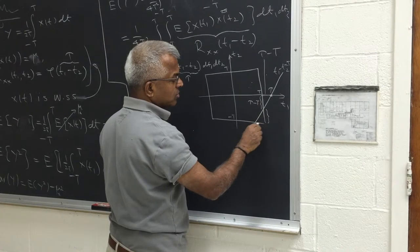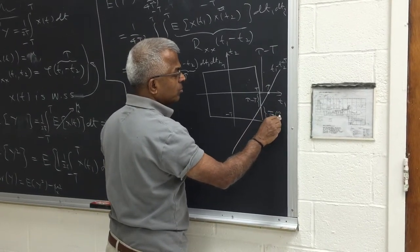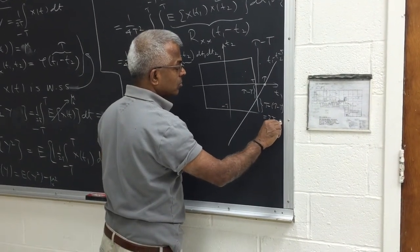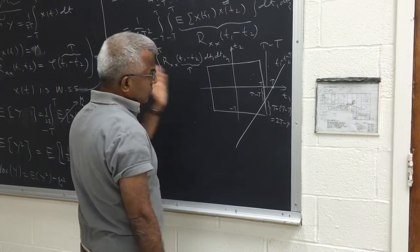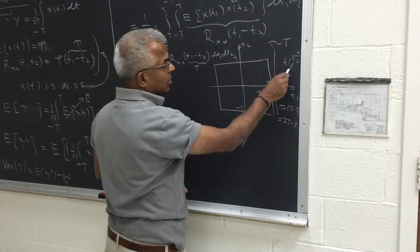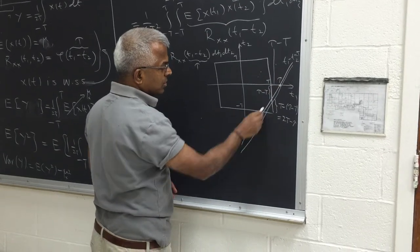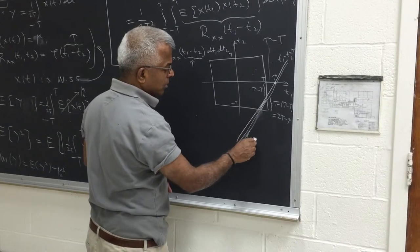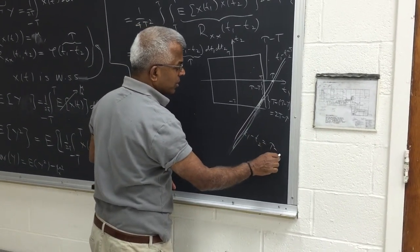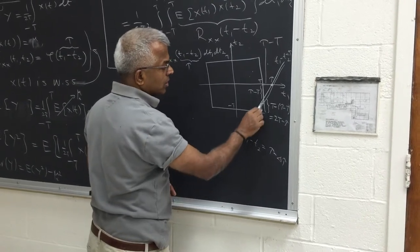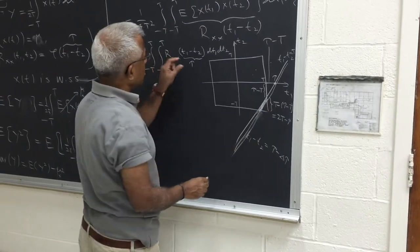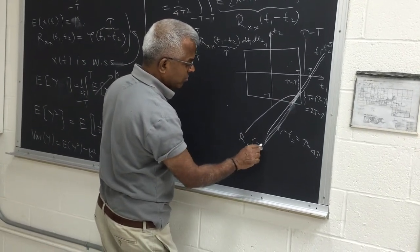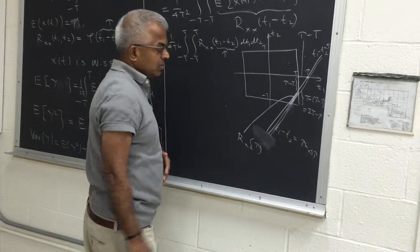So this distance, which is the side of the triangle, is t minus (τ minus t), so it will turn out to be 2t minus τ. Now we make a small change from τ to τ plus δτ. So this is the line t1 minus t2 equal to τ plus δτ. Notice that because δτ is very small, the function is constant in this interval. The value of the function is just R_XX of τ.